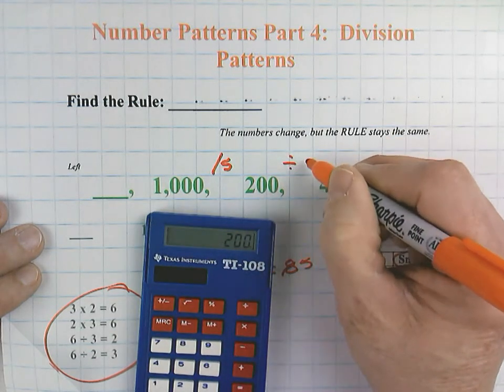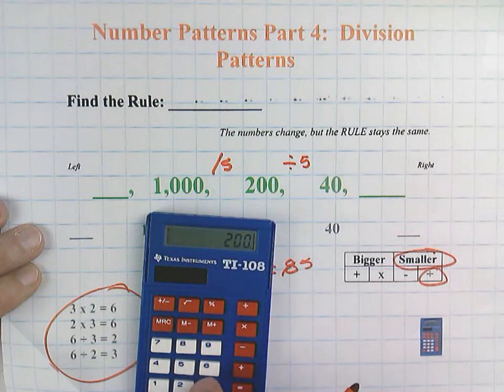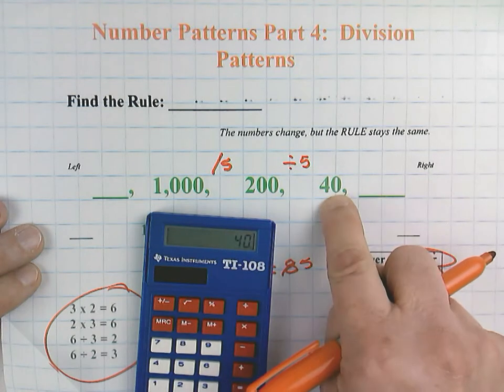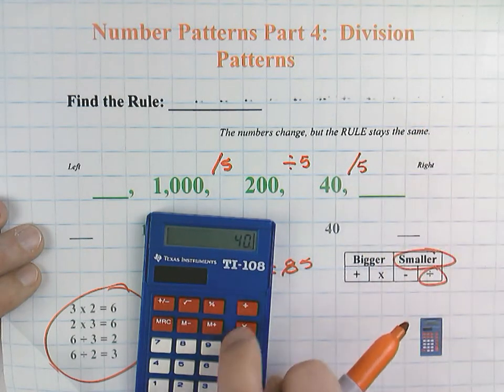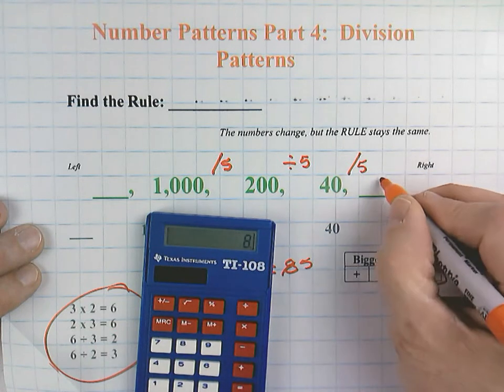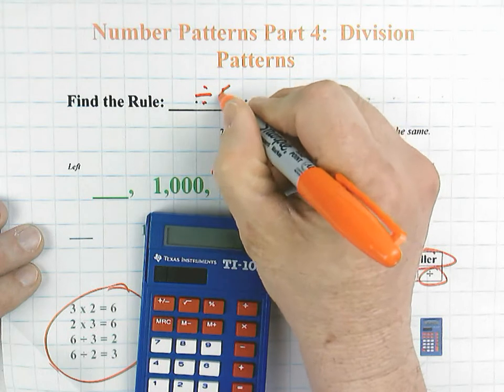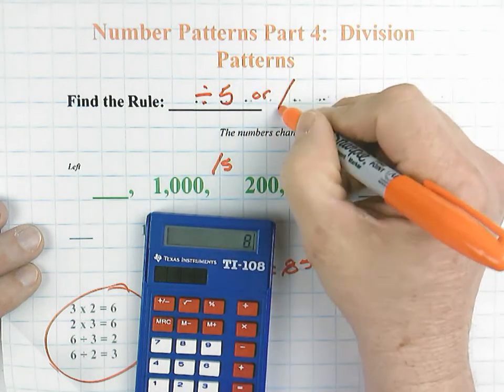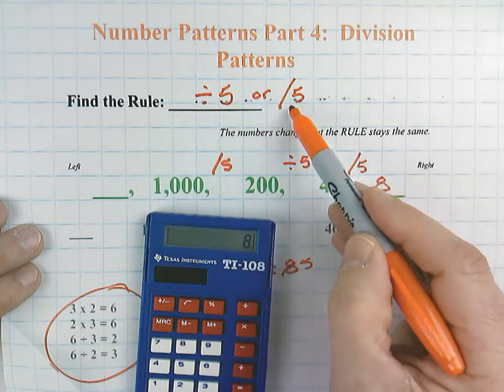So we're just going to carry out this rule. Remember, we can show it either way. And it's good to be familiar with both. 200 divided by five, there's our 40. And divided by five equals eight. So we have a divide by five. But remember, depending what grade you're on, you could express it as both divided by five or divide by five.